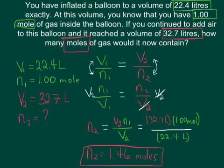To recap what we did: we read the problem and circled our before set of conditions, 22.4 liters and 1 mole of gas, and our after set of conditions in red. The volume changed to 32.7 liters, and we wanted to calculate how many moles of gas we had in this new volume. We recognized that we wanted to use Avogadro's law, rearranged the equation to solve for N2, plugged in our numbers, and got an answer of 1.46 moles.